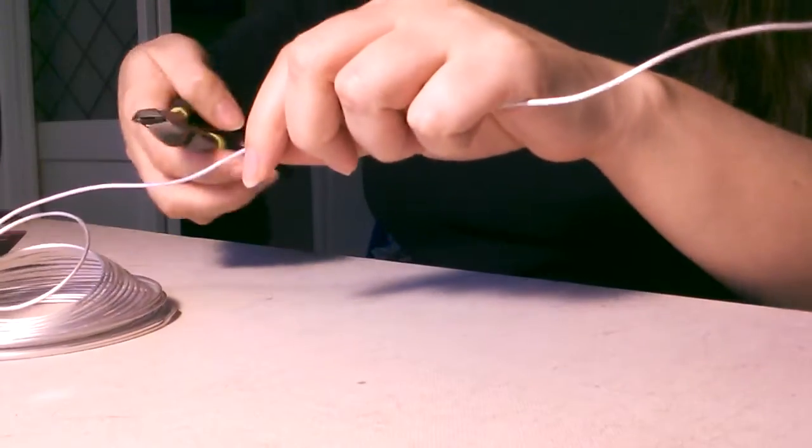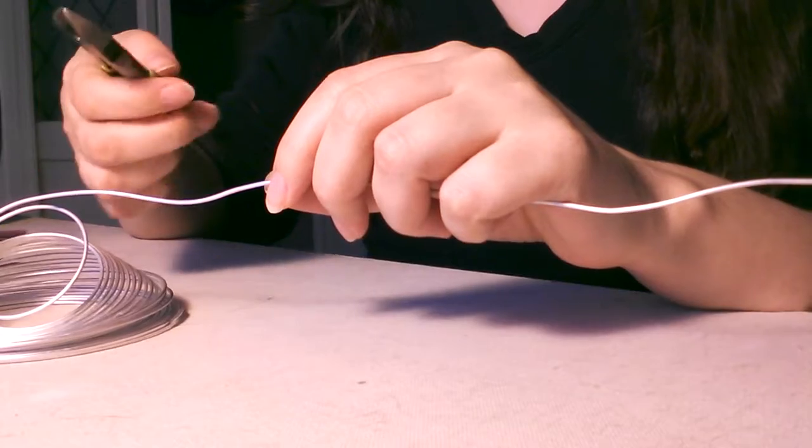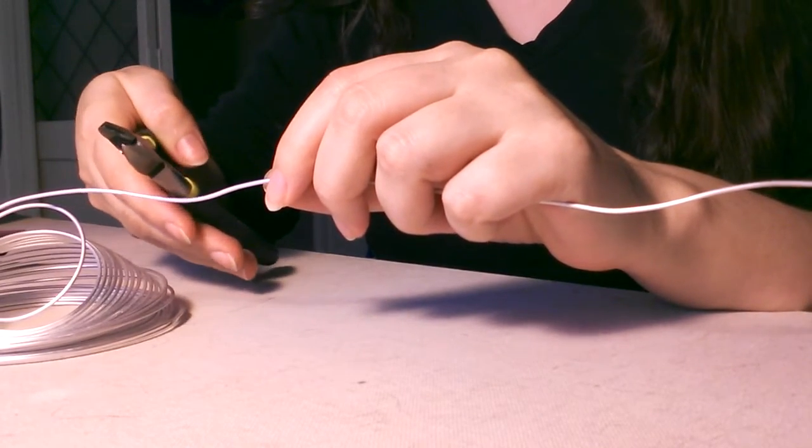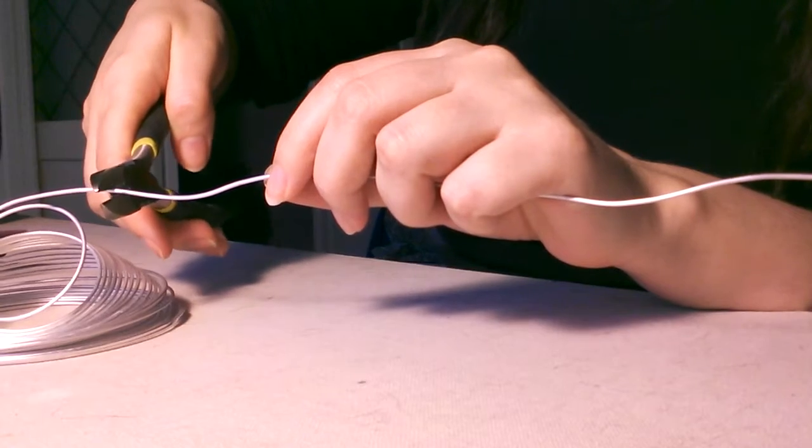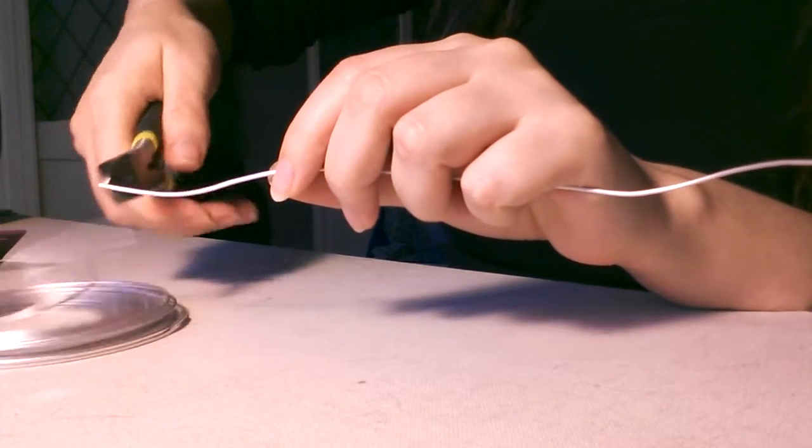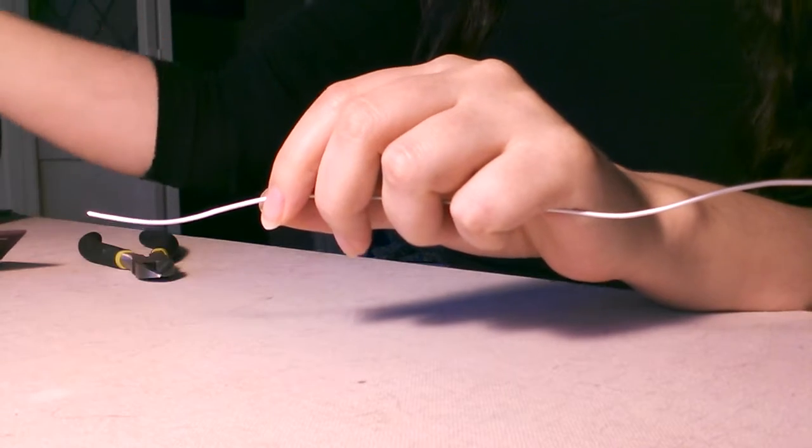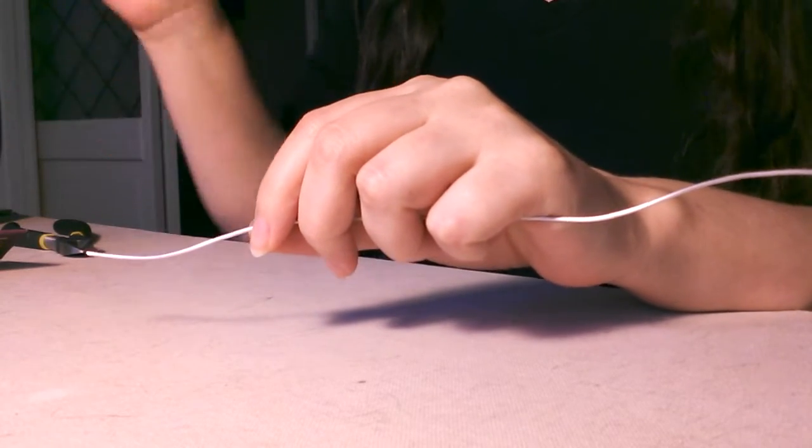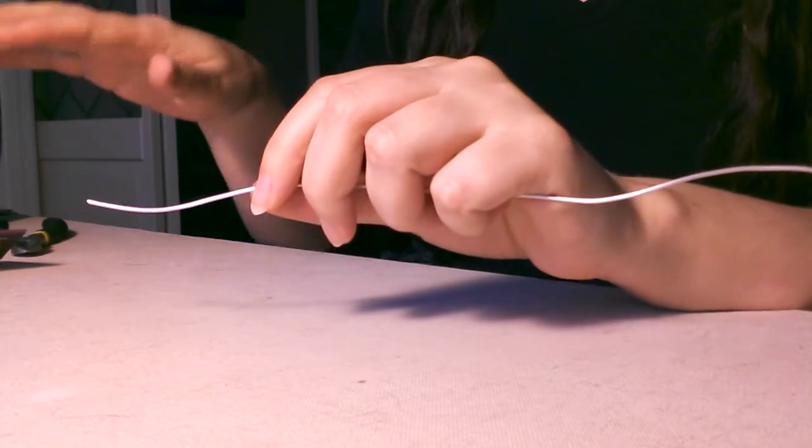And this is where the angle cutters come in handy. Now a lot of needle nose pliers come with a little cutter on them. In my experience, students who decided to just go with that cutter have gone a little crazy trying to get the wire cut because it just doesn't work as well as the angle cutter. So it's worth the investment to get those.